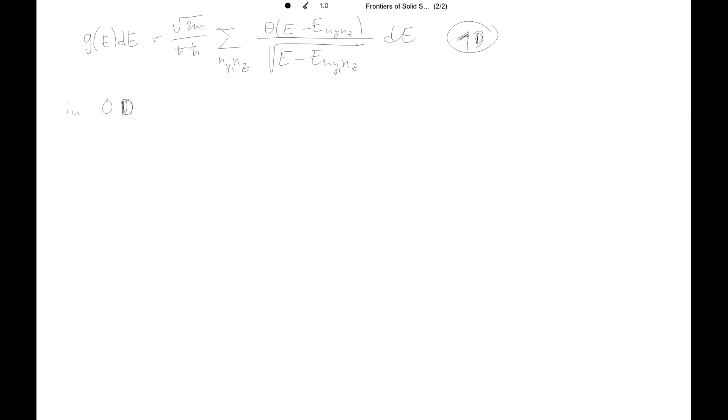In zero dimensions it's straightforward, so all states are discrete, so we just count them. Just directly count.